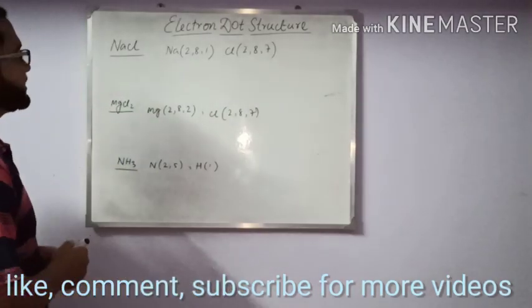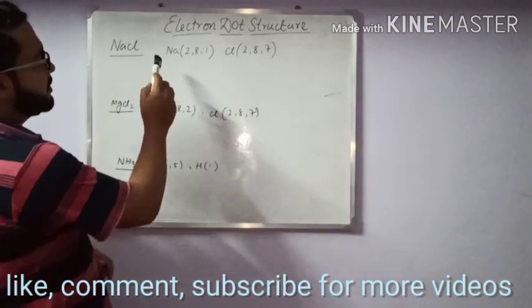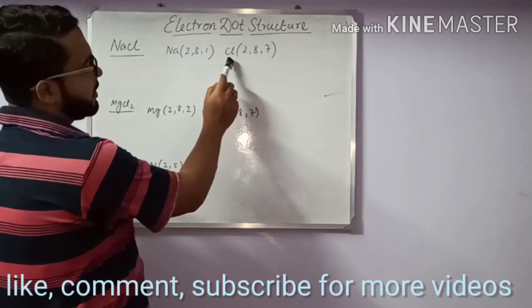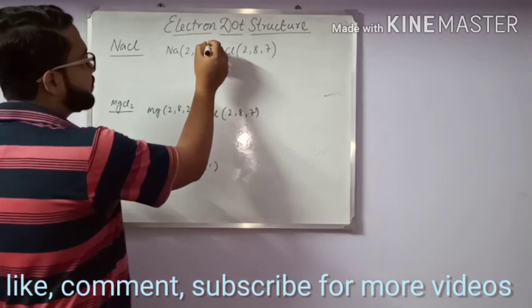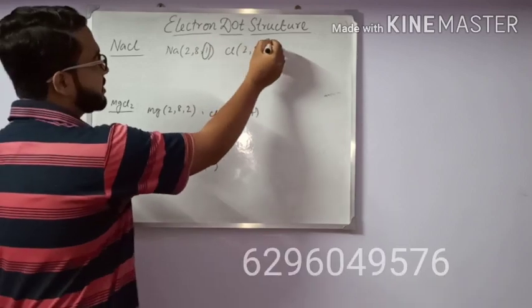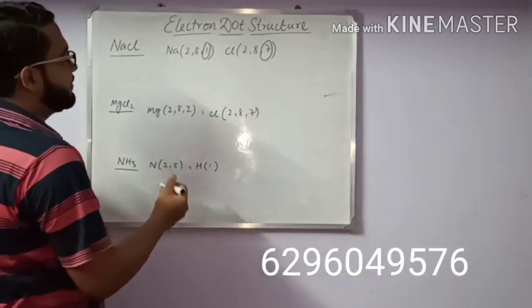So let's start. NaCl, sodium chloride - its electron configuration: 2-8-1 and chlorine 2-8-7. We have to work with the valence electrons. That is 1 for sodium and 7 for chlorine.